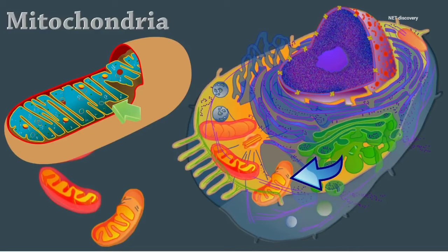They help with other tasks like signaling, differentiation, and cell death. The number of mitochondria in a cell varies depending on the cell type. Red blood cells have no mitochondria, and liver cells can have more than 2,000.